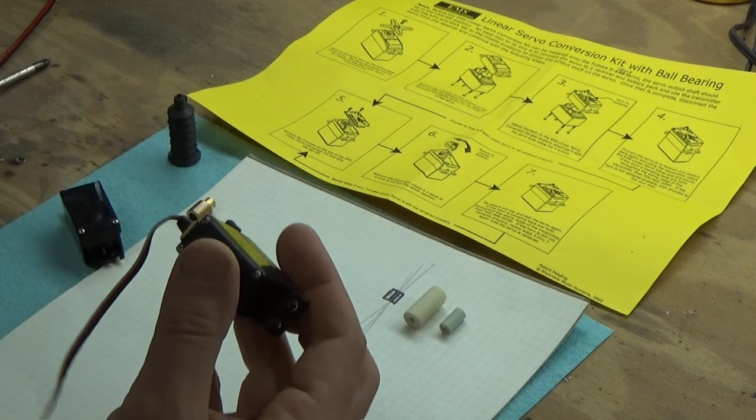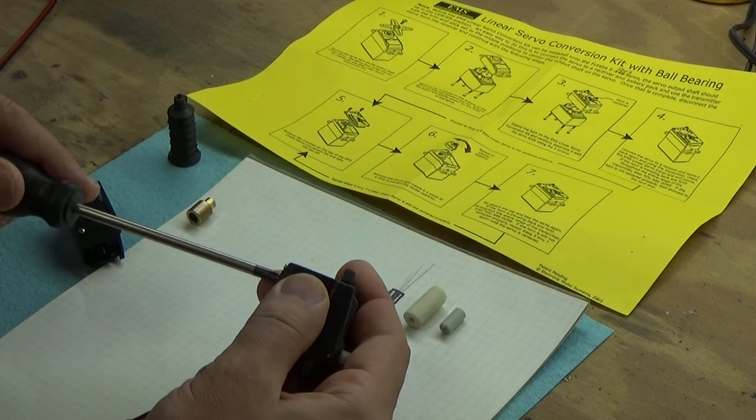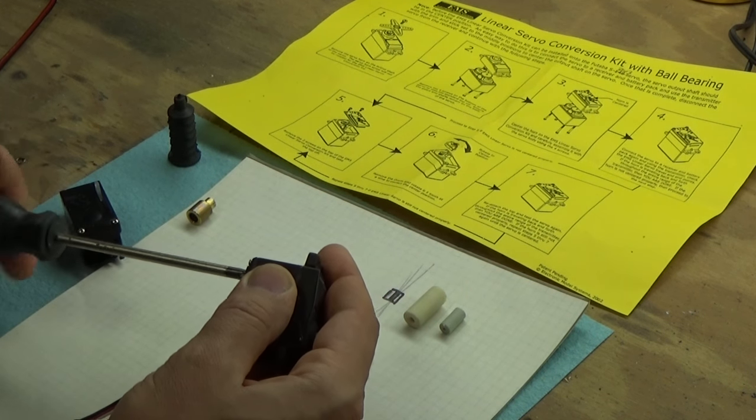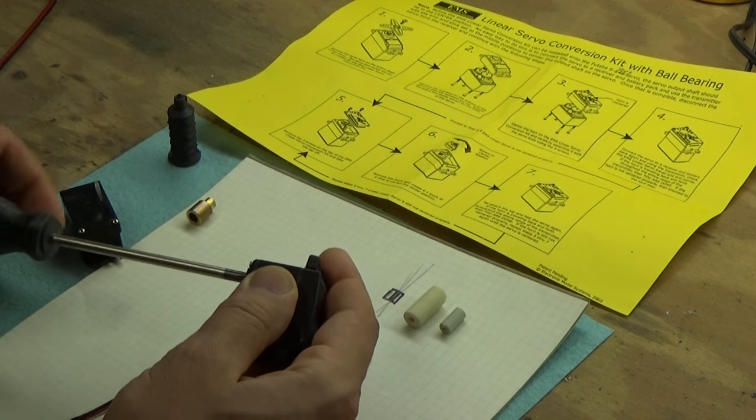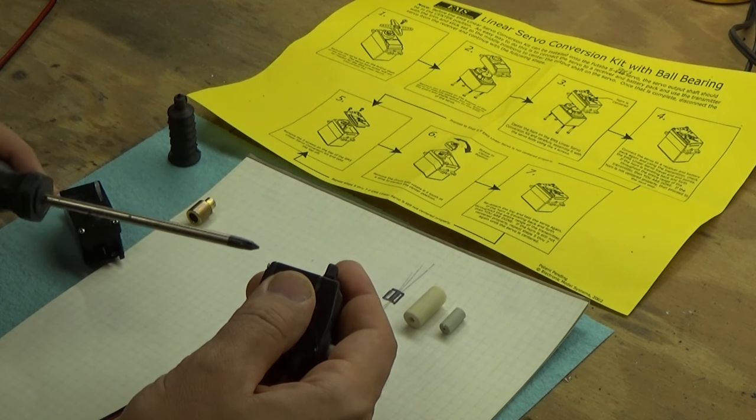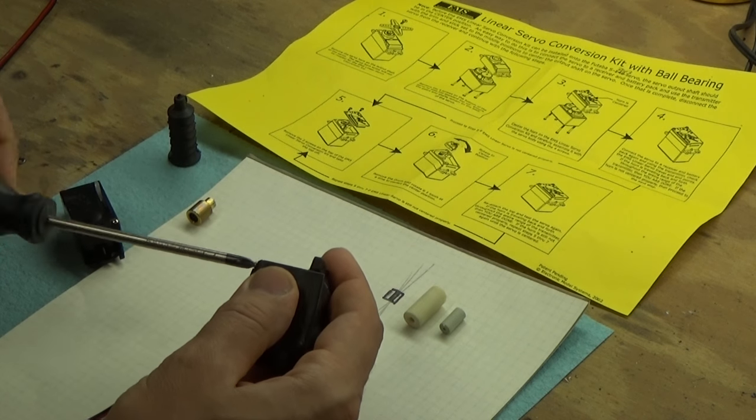So I'm just going to take my number one Phillips head screwdriver. I'm going to remove each of the four bolts holding the servo together.